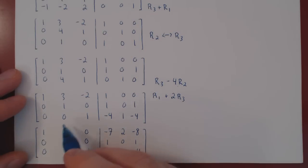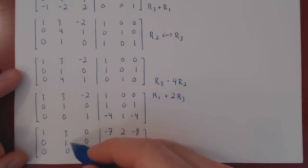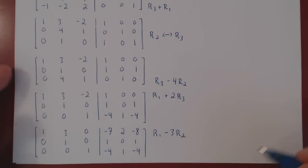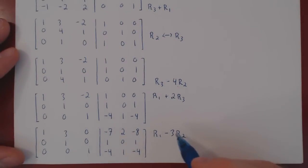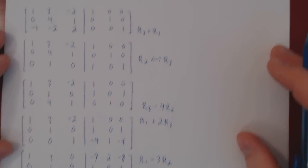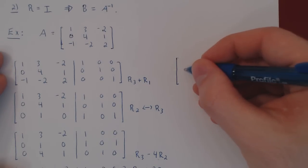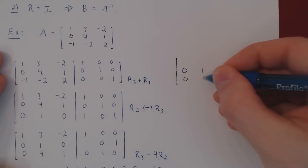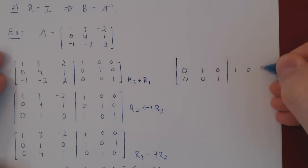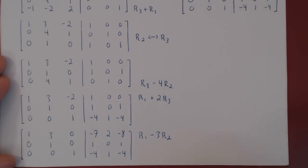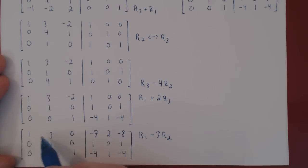We're missing one more row operation — we need to kill the 3. We do row 1 minus 3 times row 2. We are only changing row 1; rows 2 and 3 are recopied. Performing the operation: 1-0=1, 3-3=0, 0-0=0. So the first row becomes [1, 0, 0].